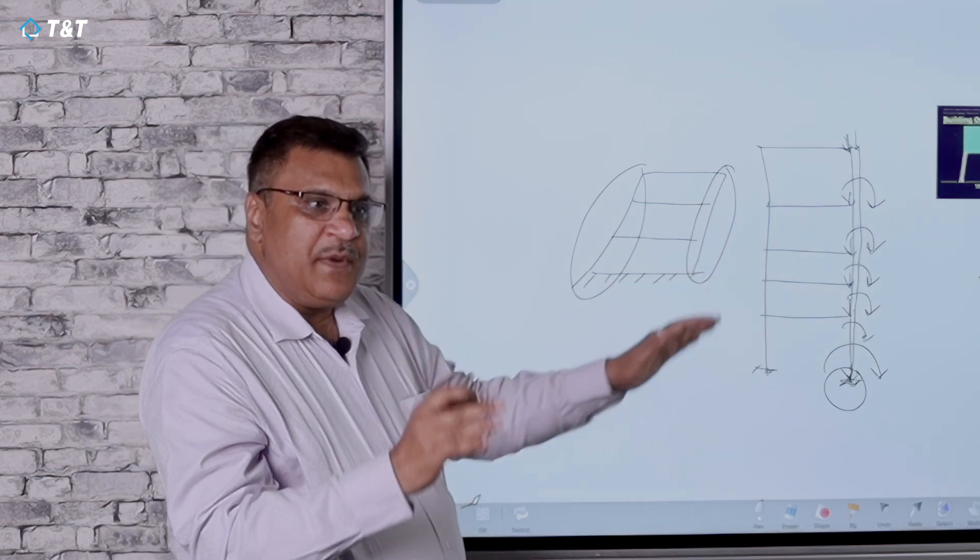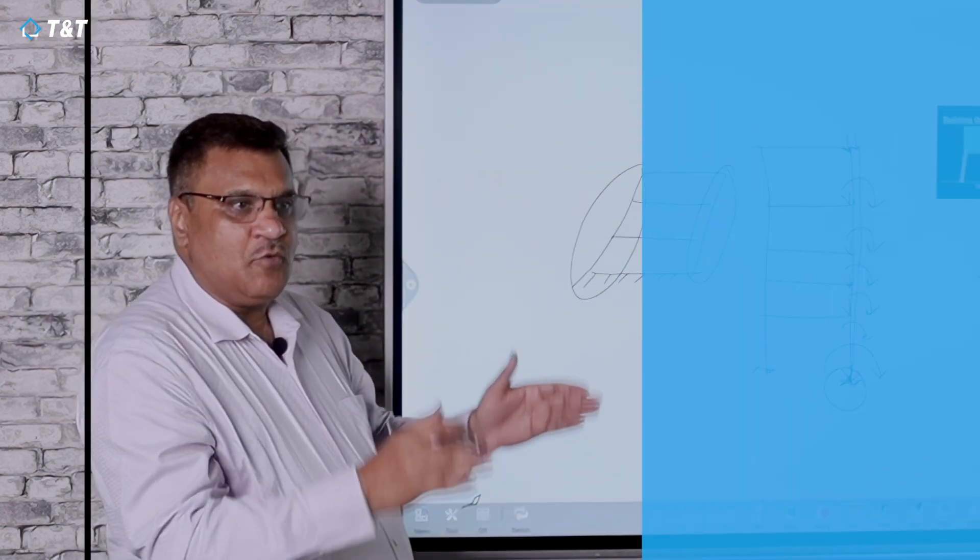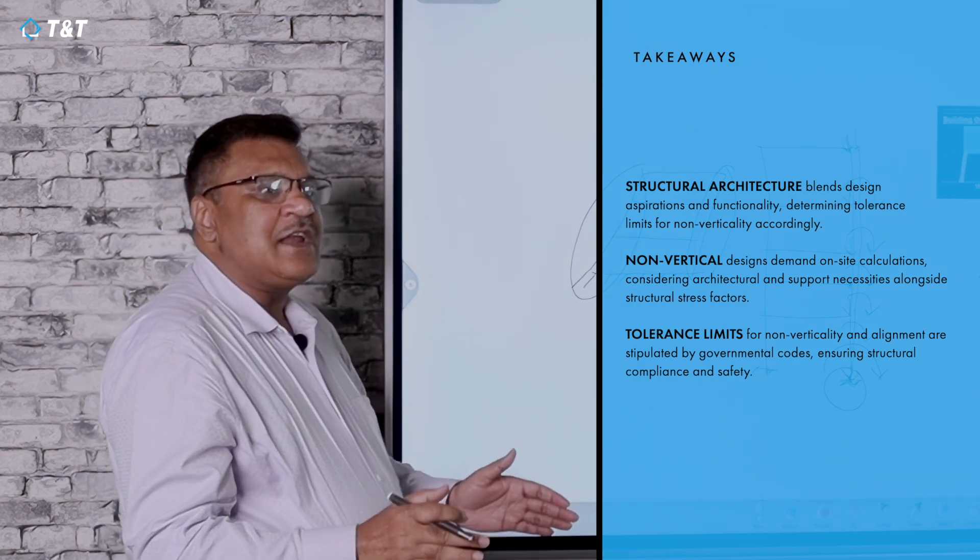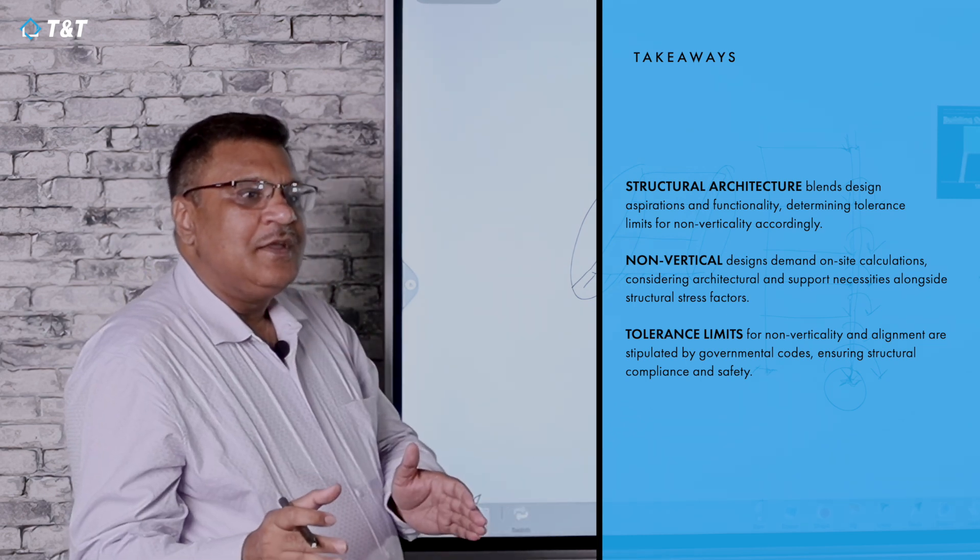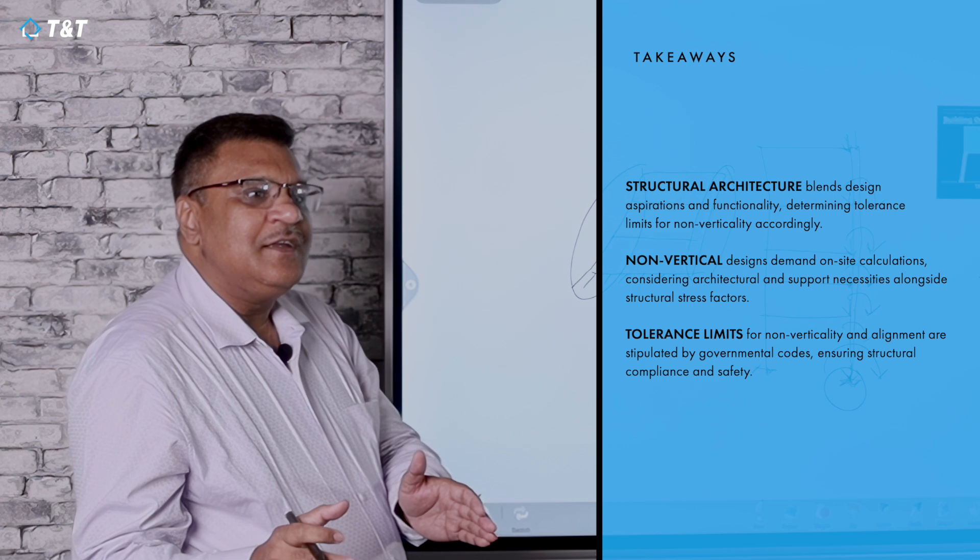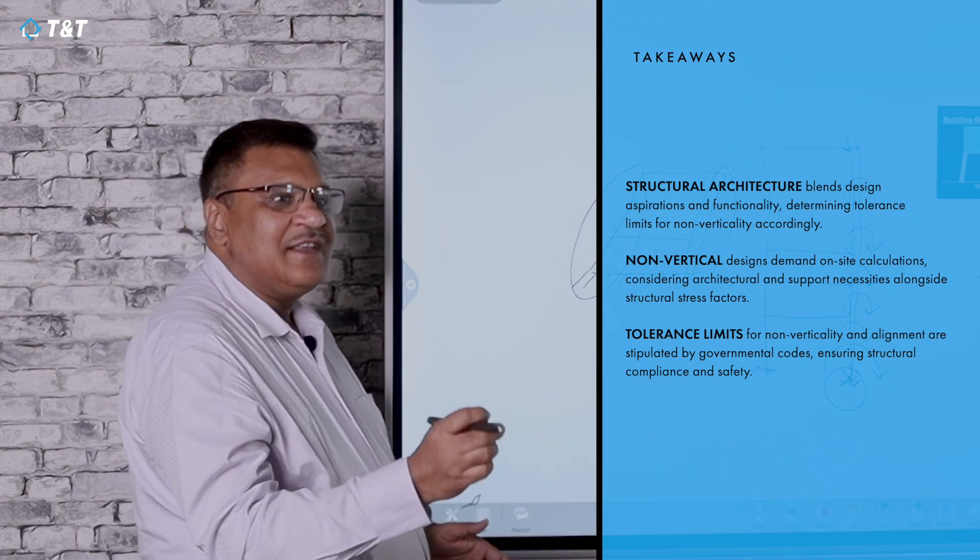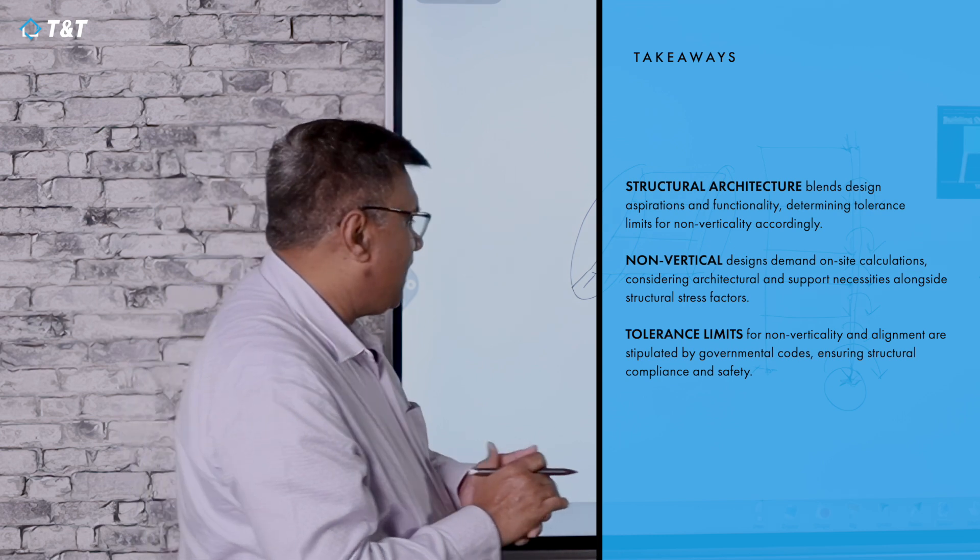Buildings have to be built perfectly straight theoretically. Practically, they have to be built with verticality and inclination near to zero, which means negligible in nature.